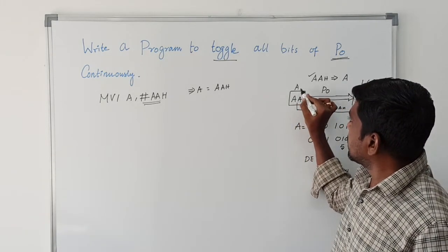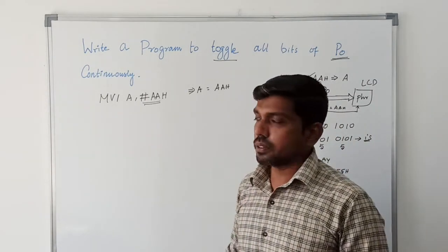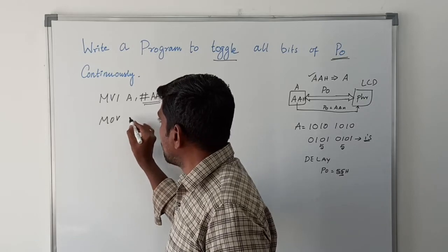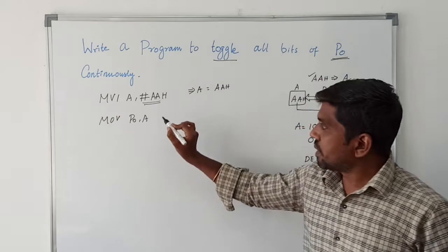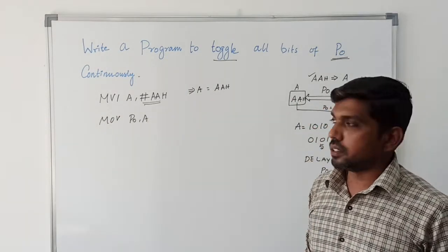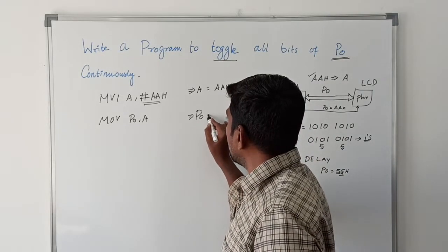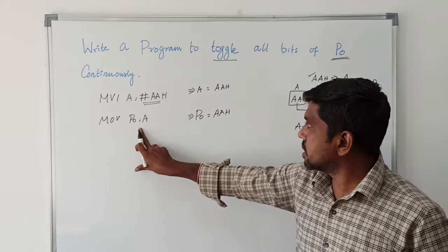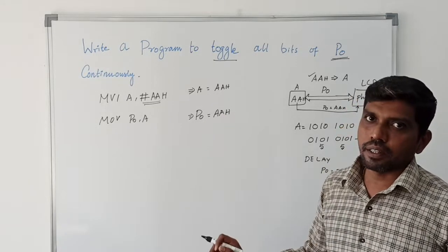Next, whatever value is present in the accumulator, this content is transferred to the peripheral device through P0. So here I am using the instruction MOV P0, A. Whatever value is present in the accumulator, this content is transferred to the P0 register. After execution of this instruction, port 0 carries the data AAH.